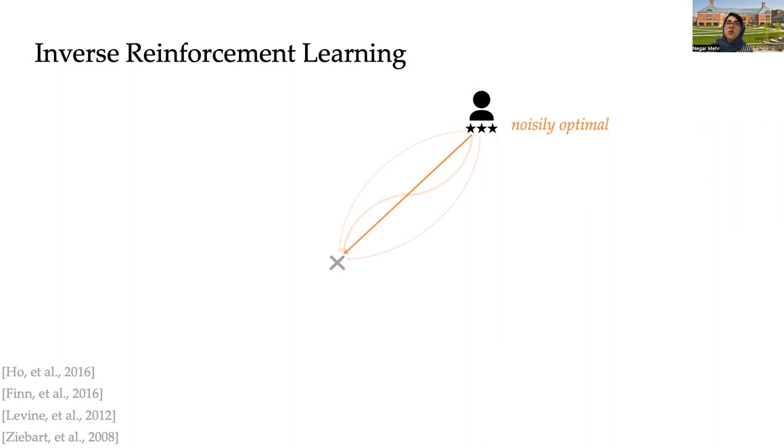And this is normally achieved through the framework of maximum entropy optimality, where the assumption is that the expert has a policy π such that the probability of taking that action in a particular state is proportional to the exponential of the negative cost associated with that state and action pair.